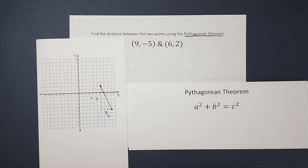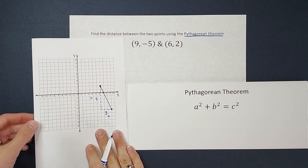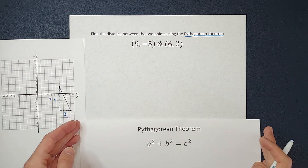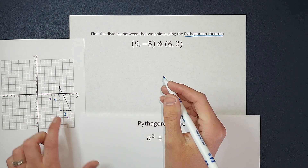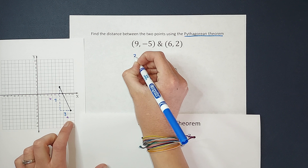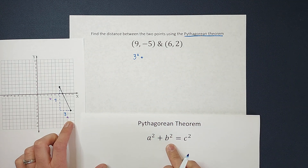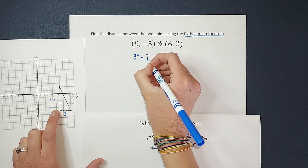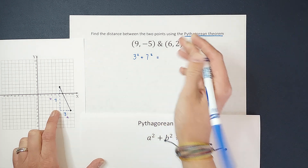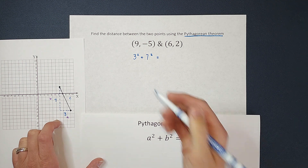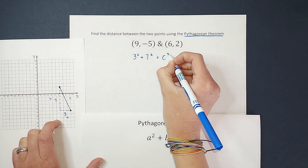If you flipped those — had 7 as a and 3 as b — you'll end up with the same answer. So let's go ahead and use our Pythagorean Theorem. I've got a squared, a is 3, so 3 squared, plus b squared, which is 7, so 7 squared equals c squared. C is my hypotenuse, the one I don't know, so we're leaving that as c squared — that is what we're looking for.